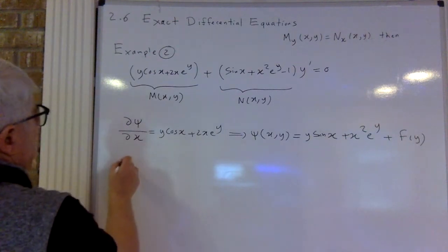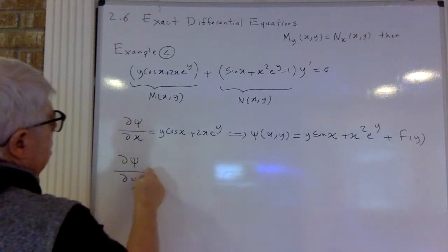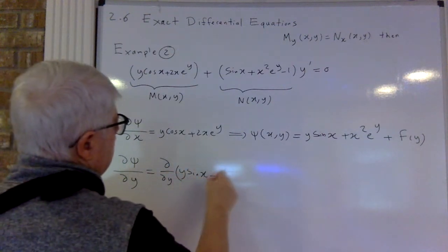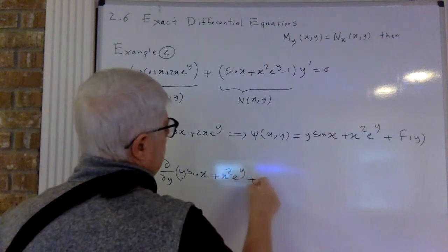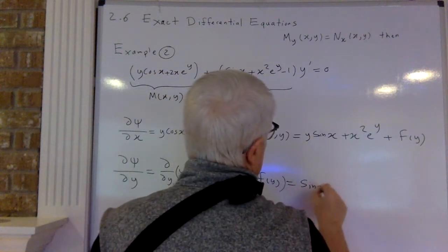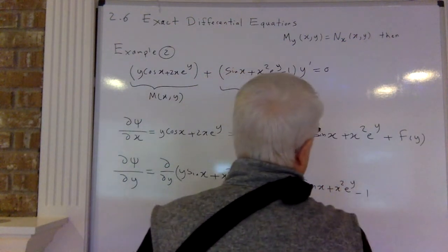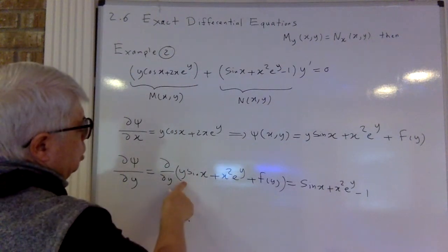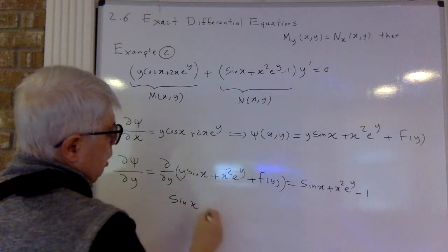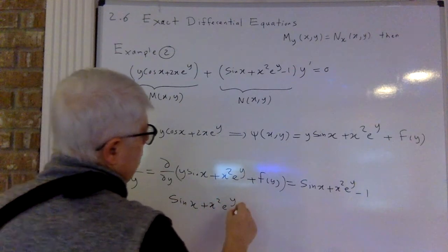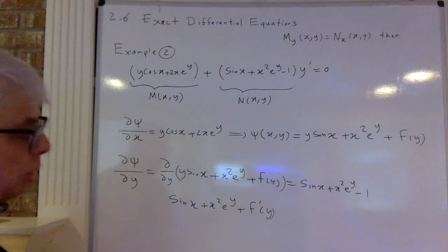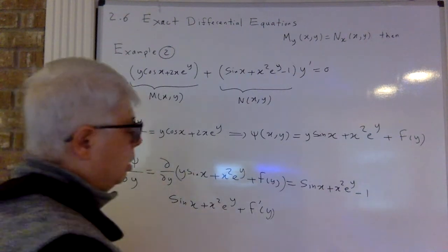Now dc/dy: taking d/dy of y·sin(x) + x²·e^y + f(y) gives sin(x) + x²·e^y + f′(y). And that should equal the second equation: sin(x) + x²·e^y minus y. When I say f′(y), with a prime for a function of one variable, it means derivative with respect to that variable — so that's df/dy.